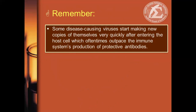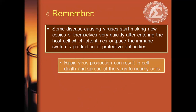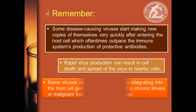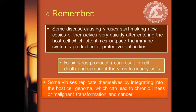Some disease-causing viruses start making new copies of themselves very quickly after entering the host cell, which oftentimes outpaces the immune system's production of protective antibodies. Rapid virus production can result in cell death and spread of the virus to nearby cells. Some viruses replicate by integrating into the host cell genome, which can lead to chronic illness, malignant transformation, and cancer.